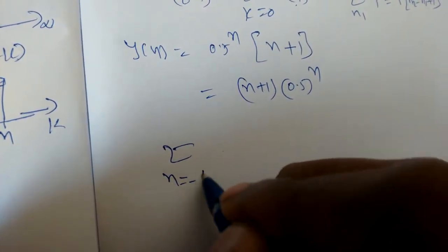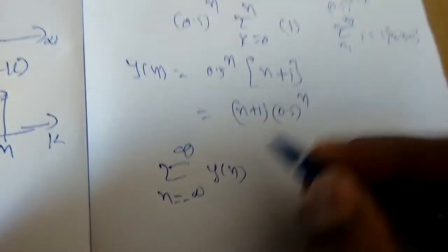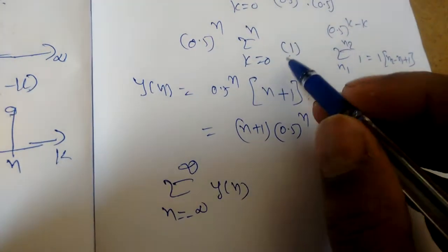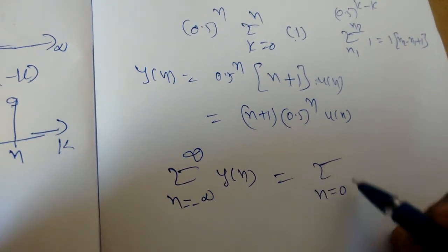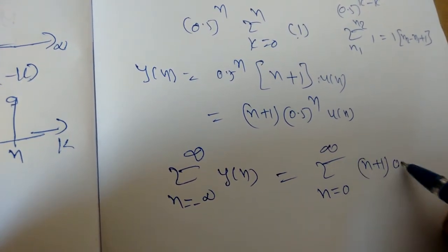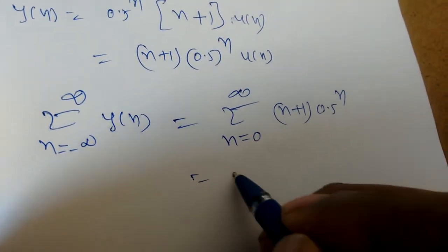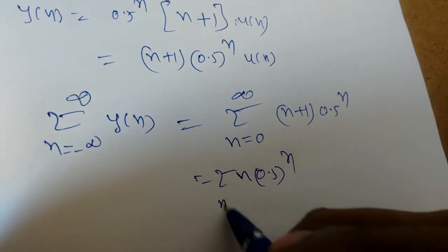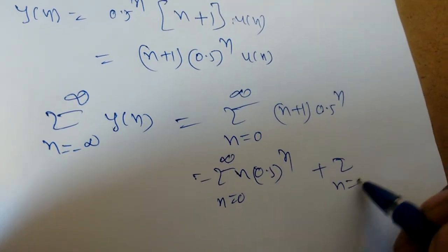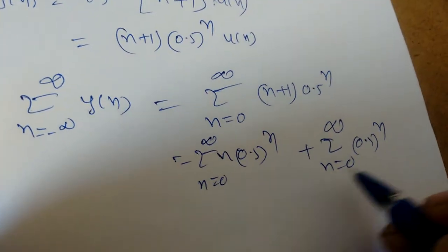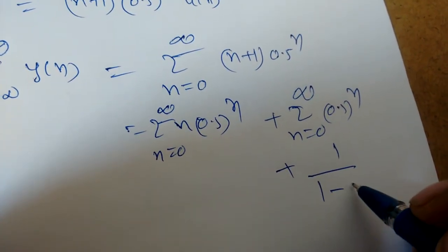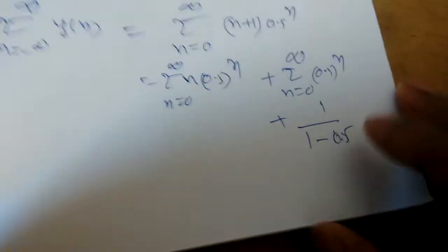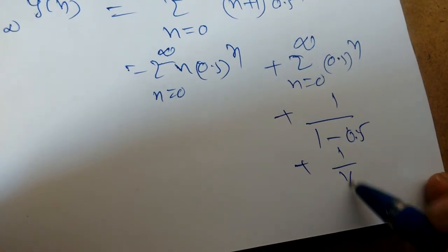The question asks for sigma from n = -infinity to infinity of y(n). Since y(n) was derived with the unit step signal, it becomes sigma from n = 0 to infinity of (n+1) * (0.5)^n. We can separate this into two parts: sigma of n * (0.5)^n plus sigma of (0.5)^n, both from n = 0 to infinity. For the geometric series, sigma of a^n = 1/(1-a), so sigma of (0.5)^n = 1/(1-0.5) = 2.